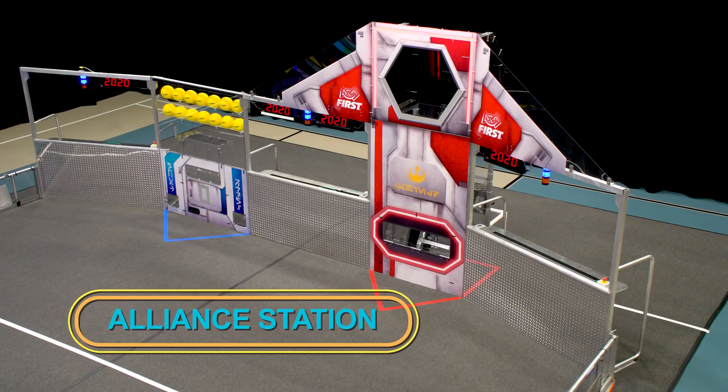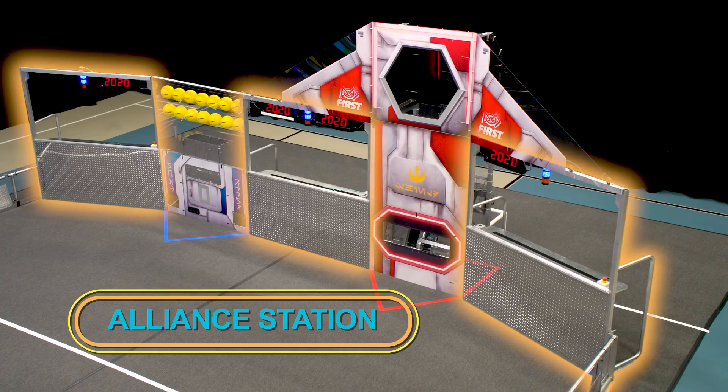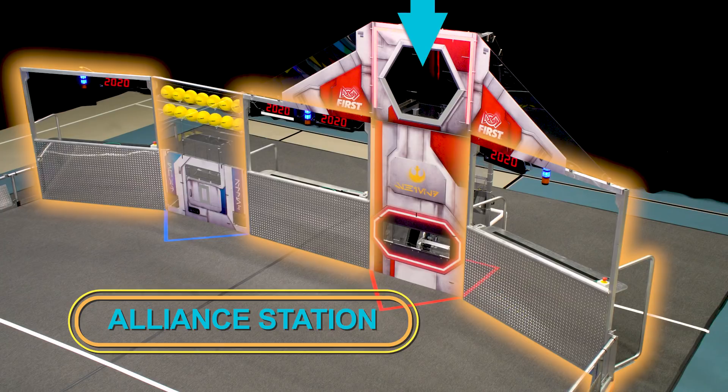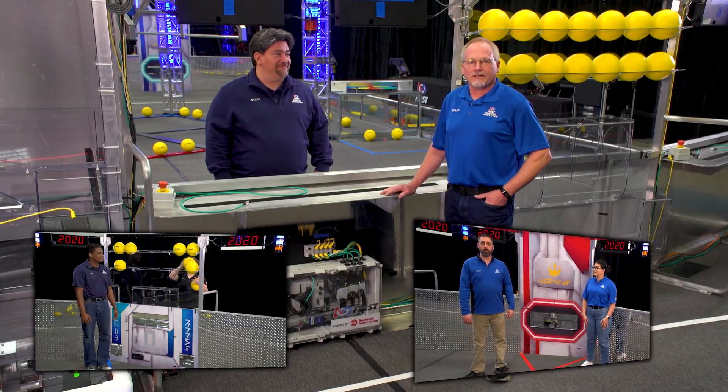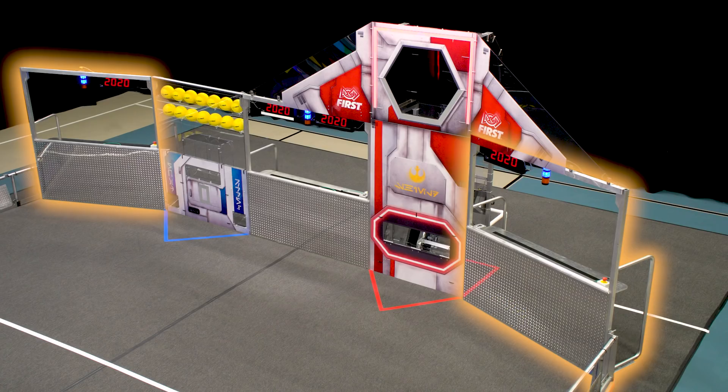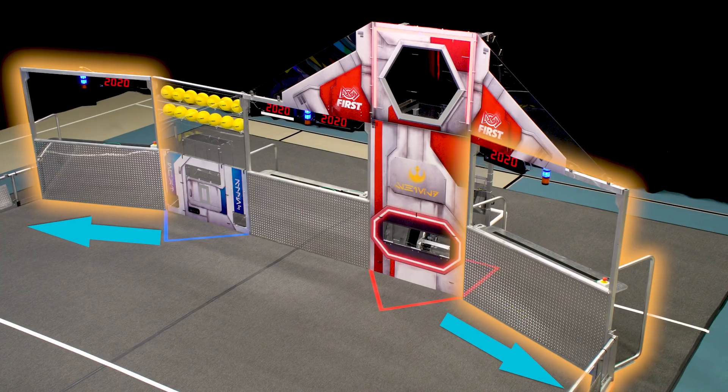The Alliance Station is the area behind the Alliance wall where drive teams play the game. It has three player stations, each of which is separated by the Loading Bay or the Powerport. You can watch Malcolm and Fiona in the Loading Bay video and Ted and Kelly in the Powerport video to learn more about those. Notice that stations 1 and 3 are also at an angle this year.